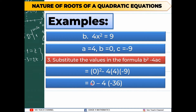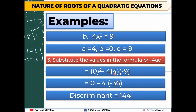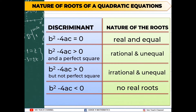Let's simplify. 0 squared is 0. Then 4 times negative 9 is negative 36. Simplifying further: negative 4 times negative 36 is positive 144. Our discriminant is 144.